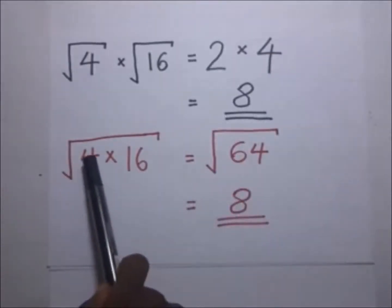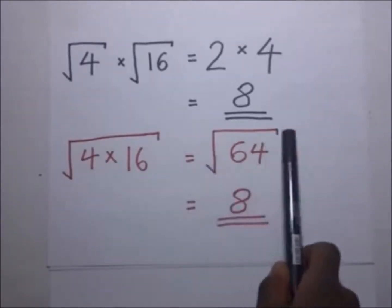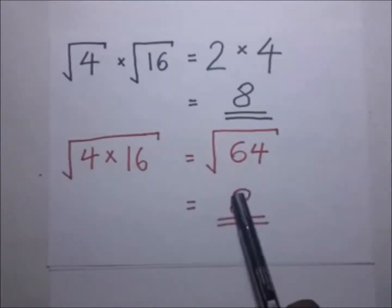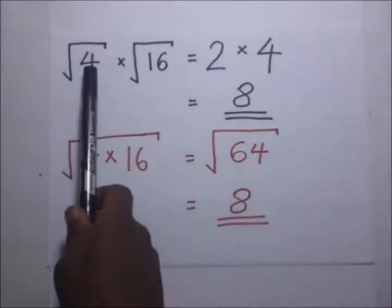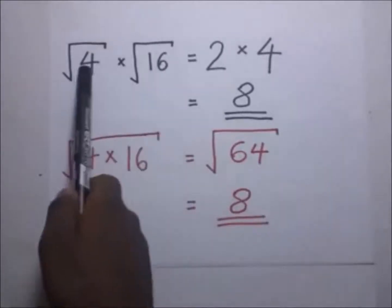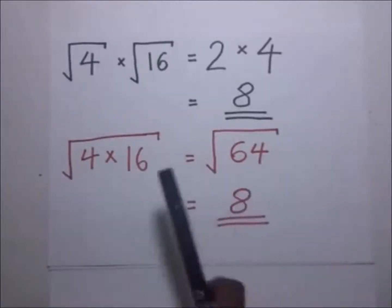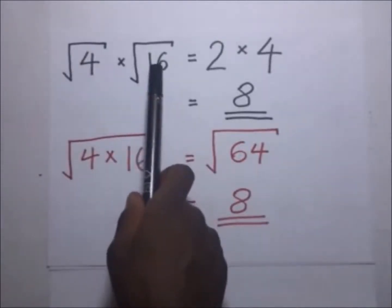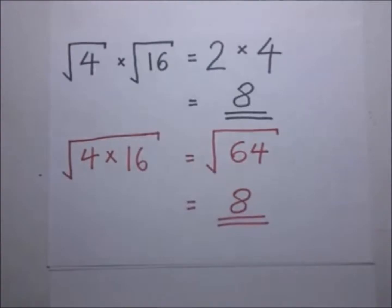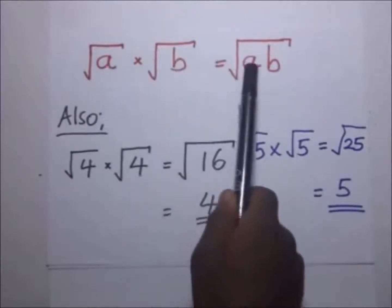At the same time, if you find the square root of 4 times 16 by first finding the product, which is 64, and then finding the square root of 64, it still gives you 8. This means that square root of 4 multiplied by square root of 16 is the same as square root of 64. The conclusion is that √a × √b = √(a×b).